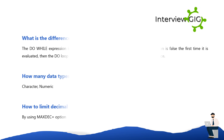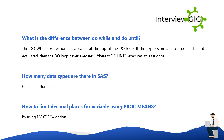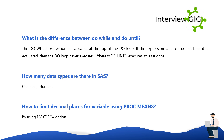What is the difference between do-while and do-until? The do-while expression is evaluated at the top of the do loop. If the expression is false the first time it is evaluated, then the do loop never executes. Whereas do-until executes at least once.